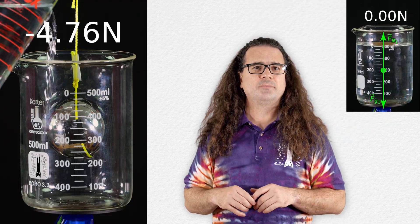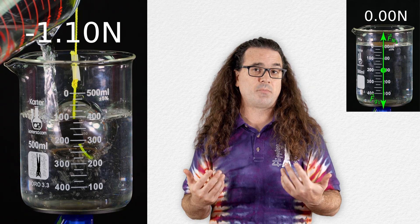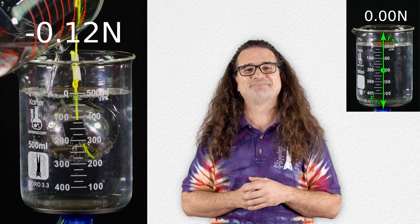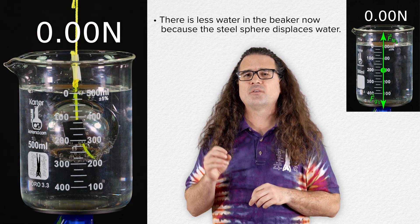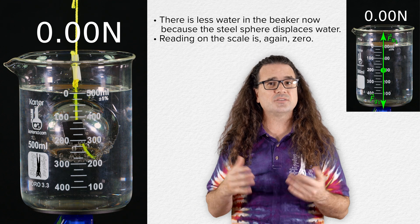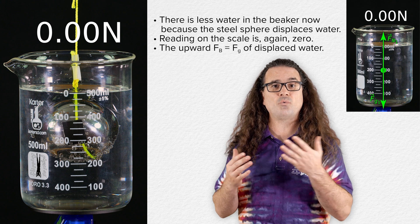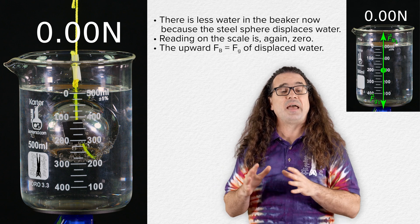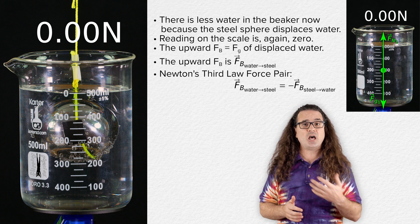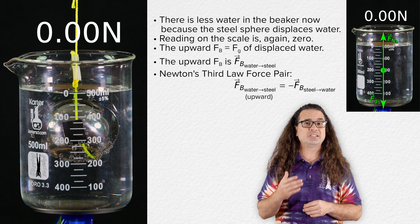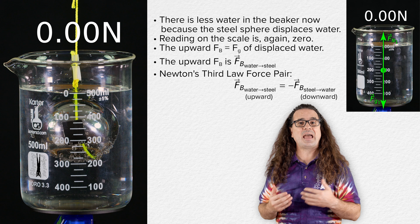Now we empty the beaker of water, hang a steel sphere in the beaker and fill the beaker with water to the same zero marker. Even though there is less water in the beaker, the reading on the scale again reads zero because the upward buoyant force on the steel sphere has a magnitude equal to the weight or force of gravity of the water displaced by the steel sphere. That upward buoyant force is one of the forces in a Newton's third law force pair: buoyant force up from the water on the steel sphere, and buoyant force down from the steel sphere on the water. Those two forces are equal in magnitude and opposite in direction.